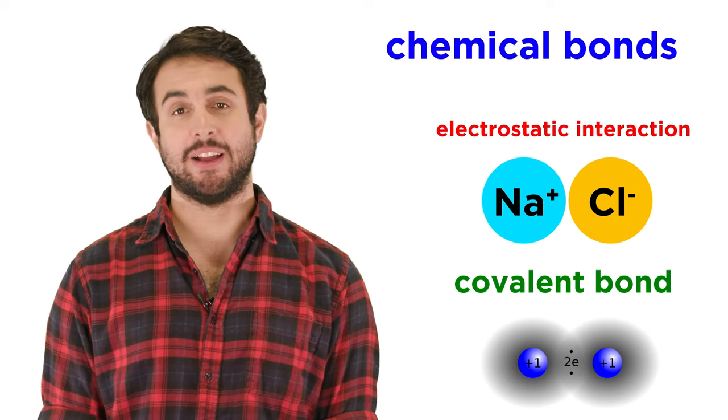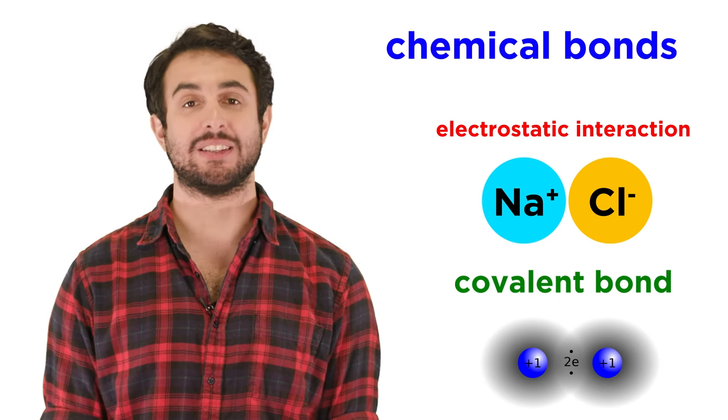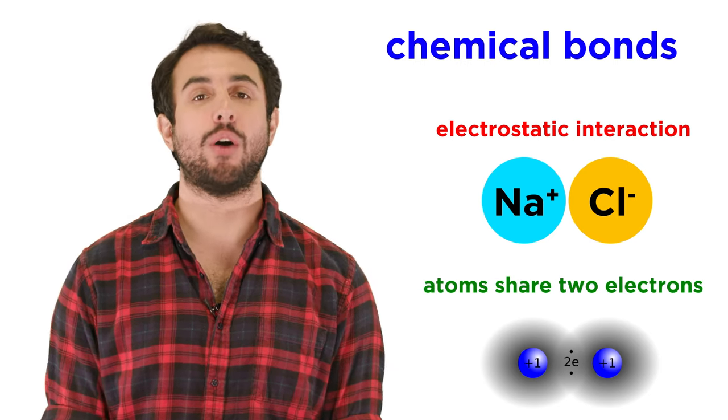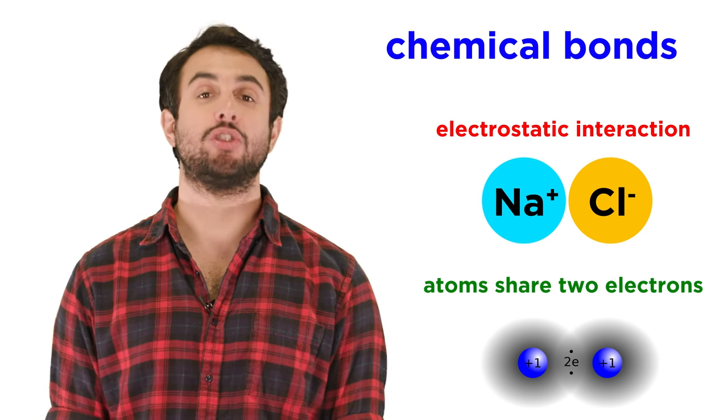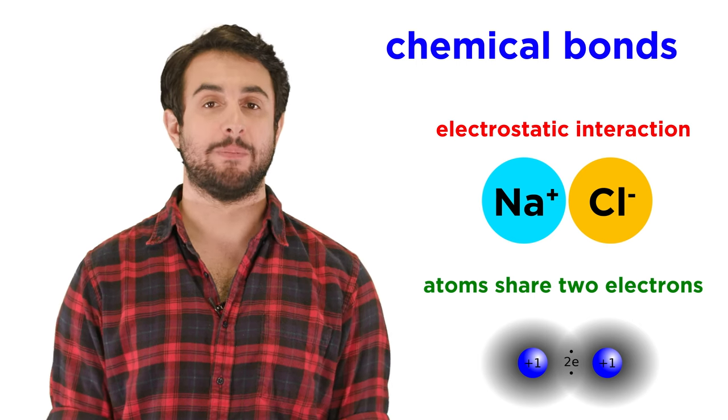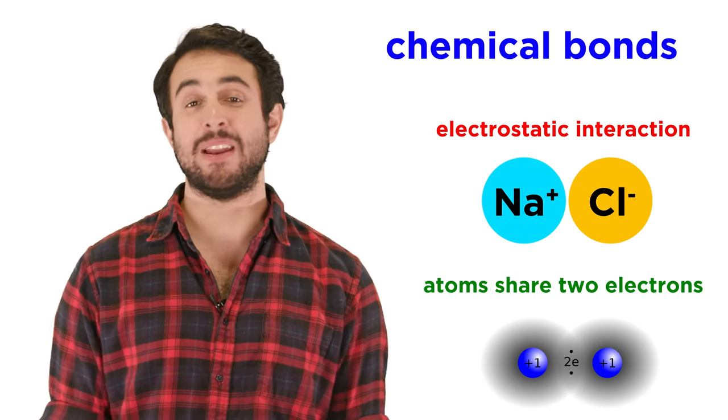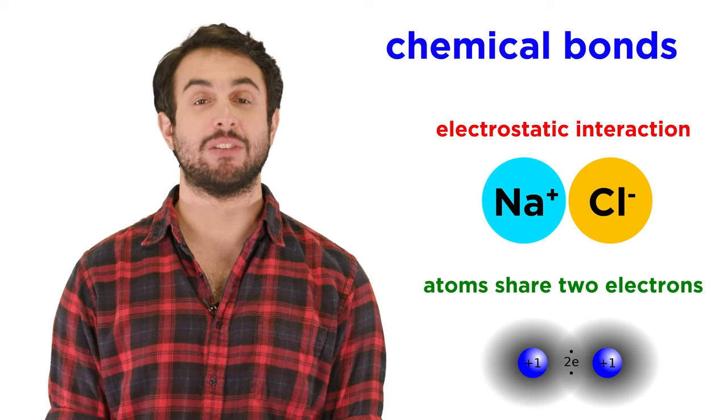Whereas an ionic bond is an electrostatic interaction between formerly charged ions, a covalent bond involves two atoms, typically two non-metals, sharing two electrons, such that each electron is interacting with both of the nuclei. Now it's time to get a bit more quantitative than this, with the help of valence bond theory.